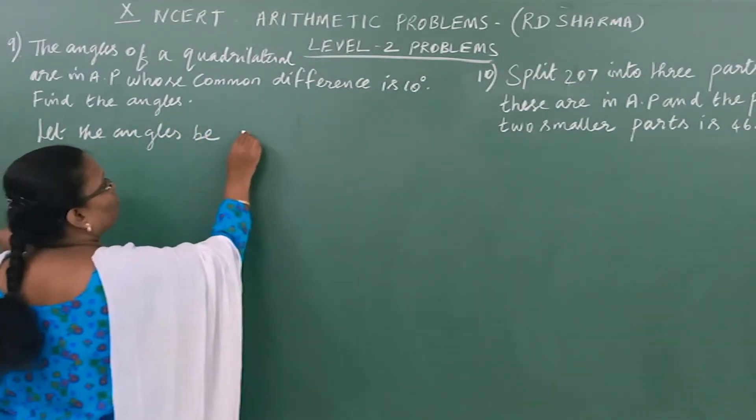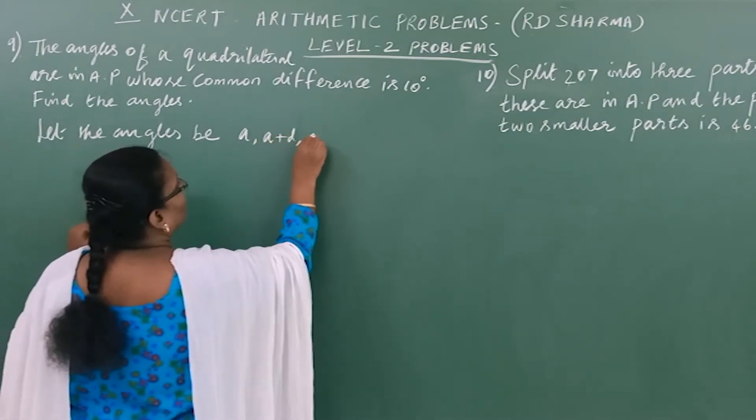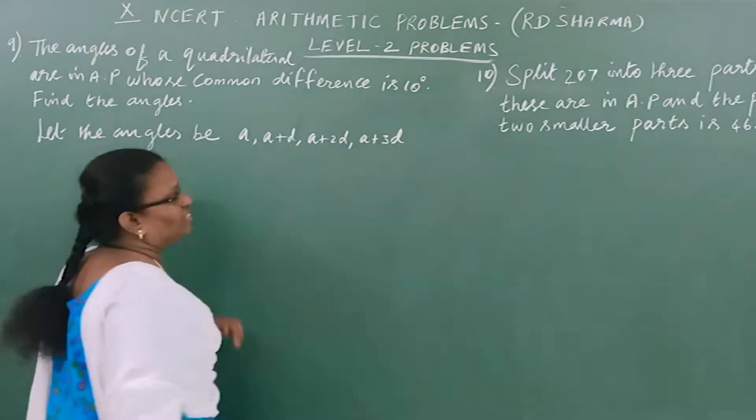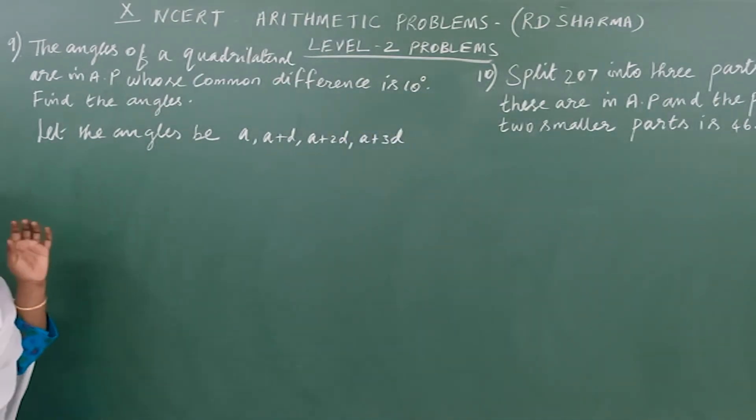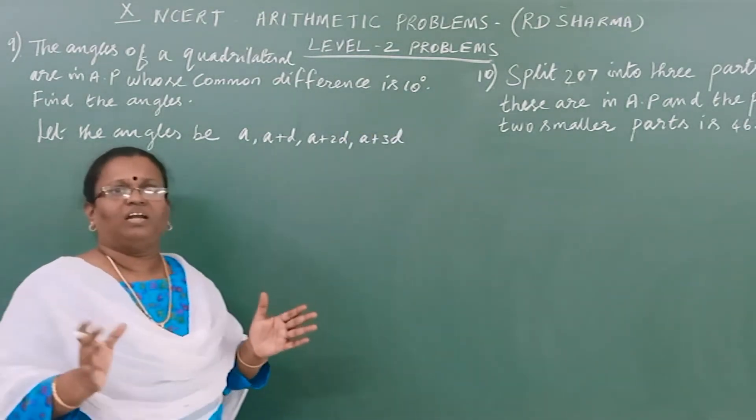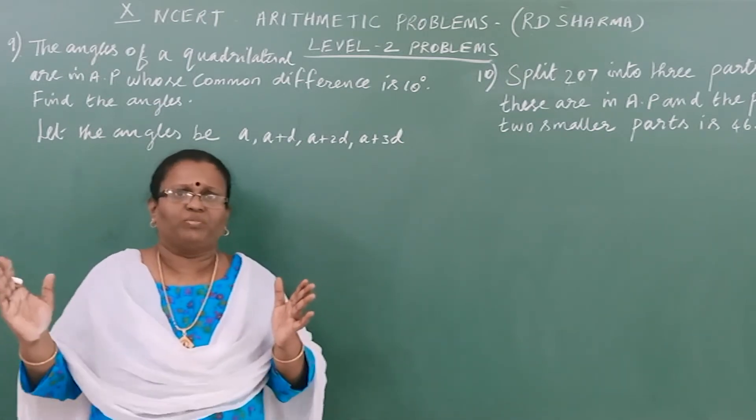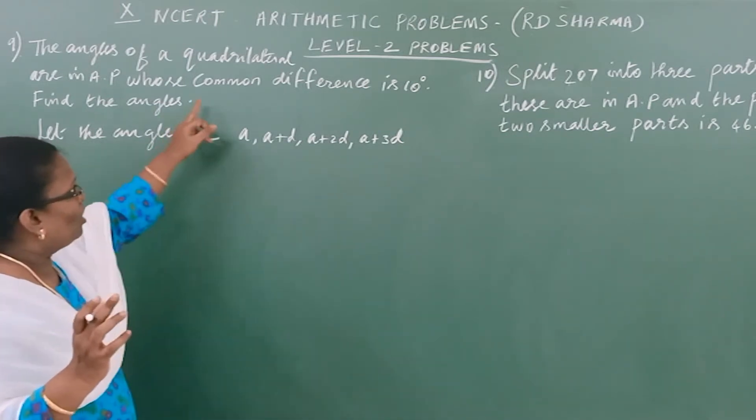Let the angles be A, A+D, A+2D, A+3D. This is how we set it up with common difference 10 and four terms. These are our angles.